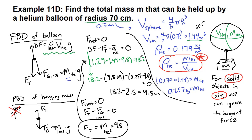Alright, so 18.2 minus 2.5 is 15.7. That's equal to 9.8 times the mass. So we divide both sides by 9.8. And we end up with 1.6 kilograms is the mass, the load that we can carry with this balloon.